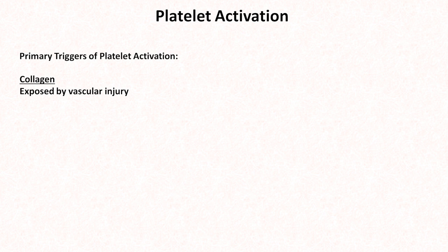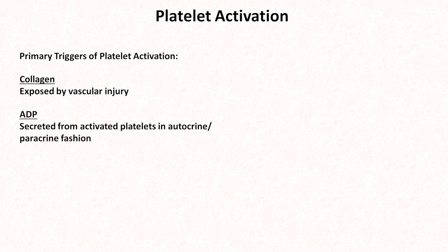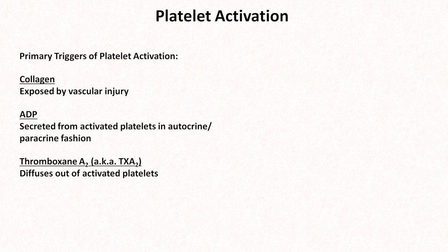As platelets travel in the circulation, they exist in an inactivated, non-sticky state and do not actively secrete compounds that promote hemostasis. There are four primary compounds that trigger platelet activation. The trigger for the first wave is subendothelial collagen, exposed to blood following vascular injury. ADP is another trigger, actively secreted out of activated platelets in an autocrine and paracrine fashion, enhancing activation of the secreting platelet and activating nearby inactivated platelets. Thromboxane A2 is a compound that diffuses out of activated platelets and can also act in an autocrine or paracrine fashion. Finally, thrombin, activated from the coagulation cascade, can activate platelets as well.